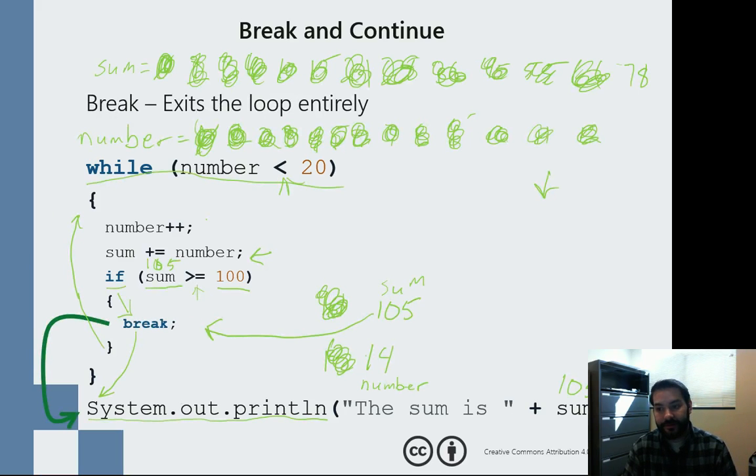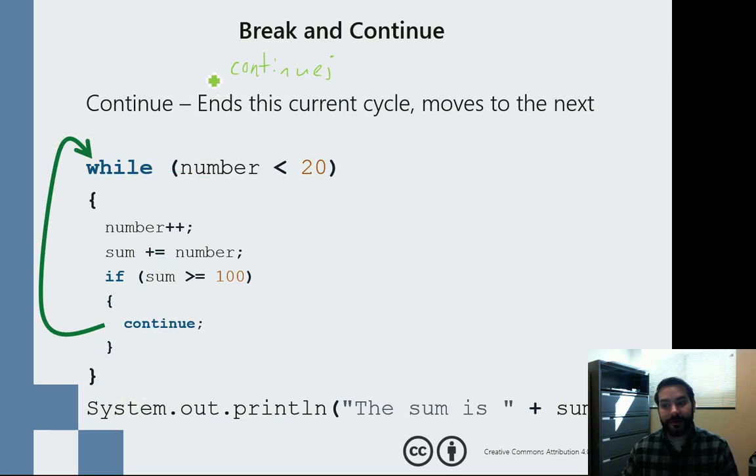I know this is crazy, but break exited out of the loop and moved on with the rest of the code. Continue will actually end the current cycle or iteration and move to the next statement.